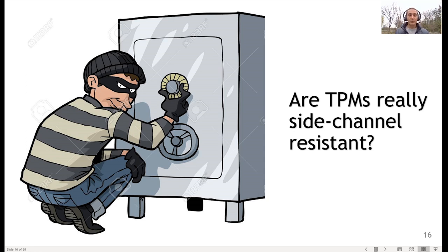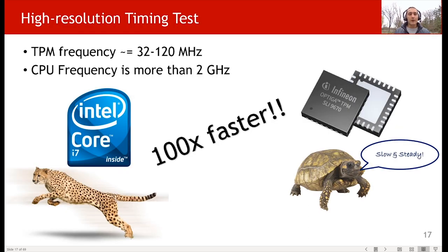One of the most important side channel attacks is timing attacks — they are not very intrusive, you don't need physical access, and they can often be performed remotely. To perform a proper timing analysis of these devices, we need a precise timer. In this research, we use the CPU cycle count as our timing source. The CPU frequency is much higher than TPM chips, which are generally low-powered microcontrollers running around 32 megahertz. The CPU is about 100 times faster, making CPU cycle count an excellent timing resource.